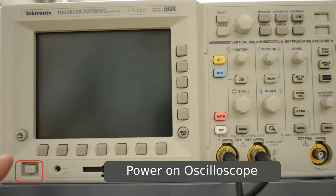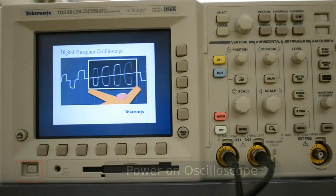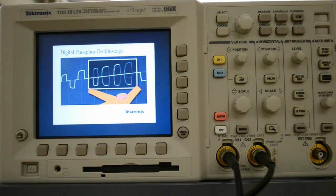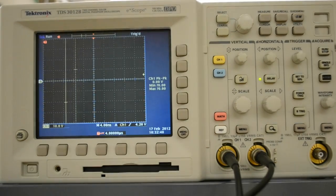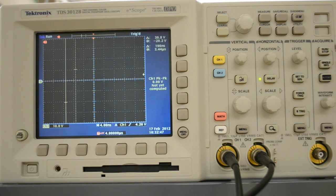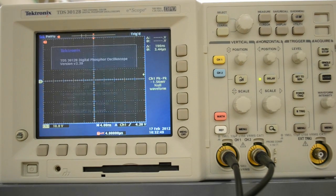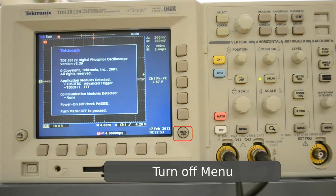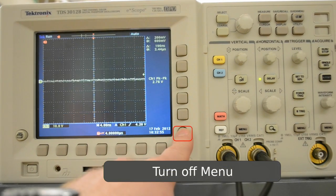When you power on the oscilloscope, you push the power button in until it clicks and do a self check, then turn off the self check and push menu off.